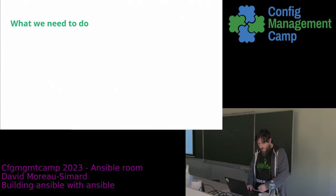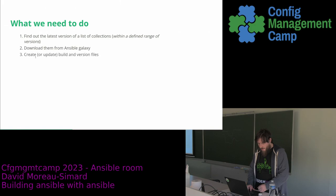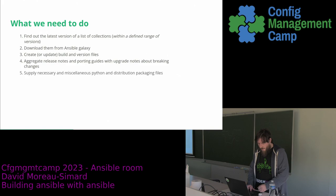So what do we need to do if we want to build the Ansible package? First, we need to find out the latest version of a list of collections. We have a list of collections we're interested in and we need to find the latest version so we can include the latest version, not some random version. We need to download them from Ansible Galaxy, update some build and version files, aggregate release notes and porting guides about breaking changes, handle necessary Python packaging files, actually build the package, and ideally test it so we don't ship a broken package.